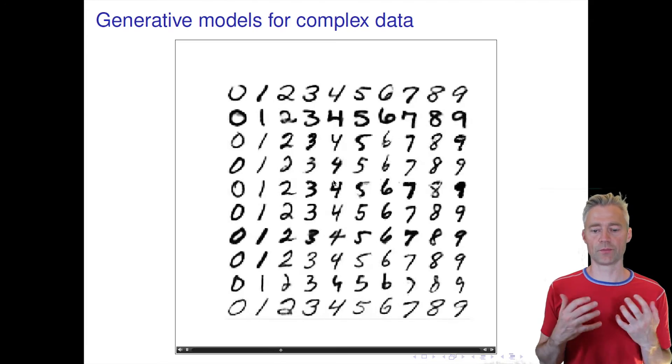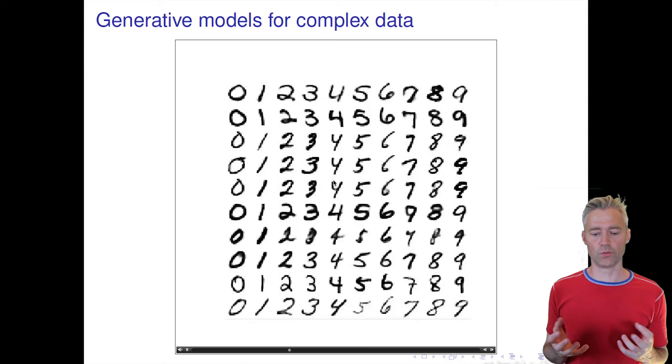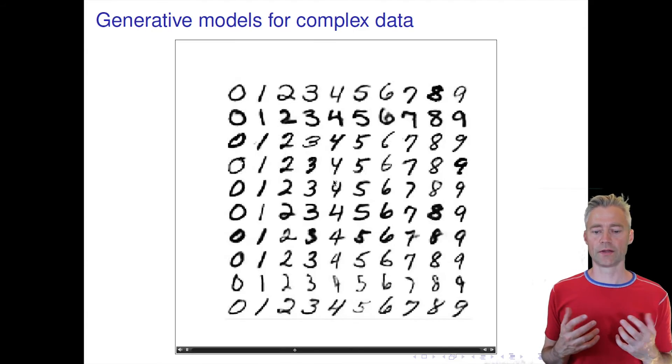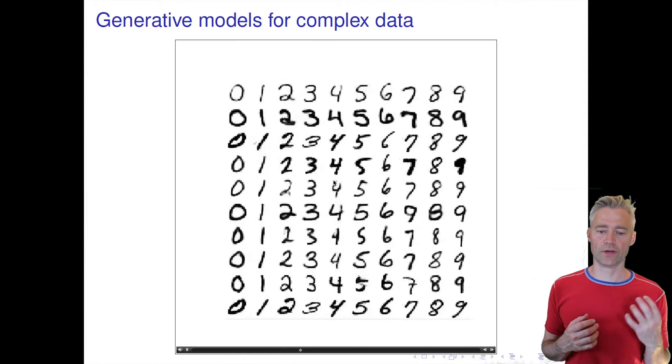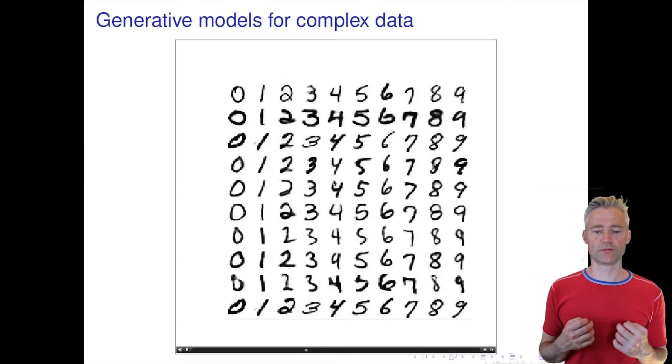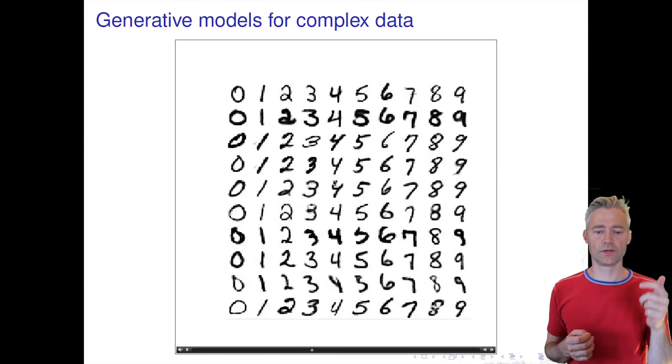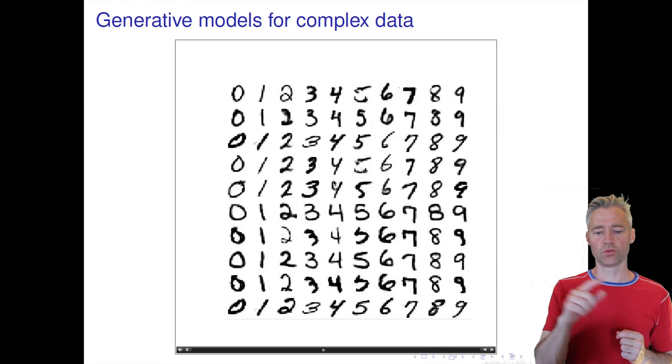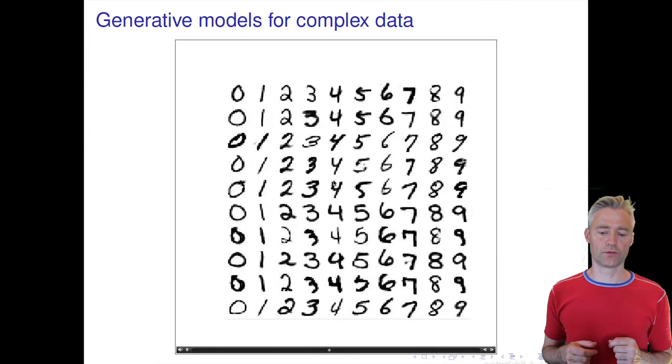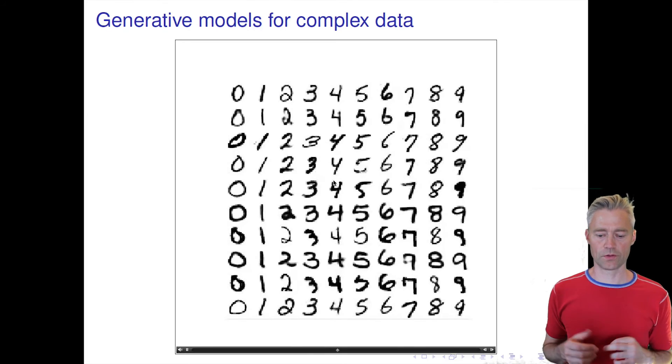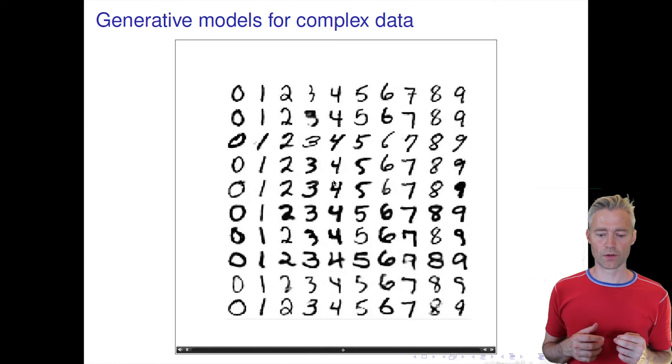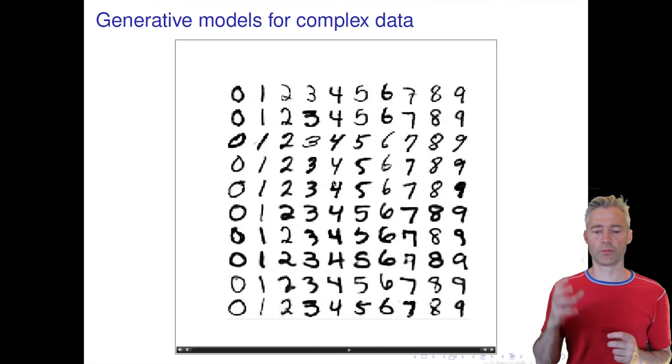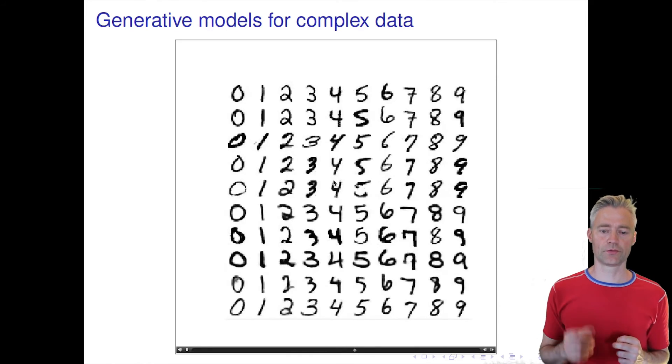But have the similar statistics. And in this case we have trained a model where we can separate the label and the style. So you can see, for example, in the second row we have a tendency here to write digits with a very thick pen, and we can do that for all the digits in the different 10 digits.